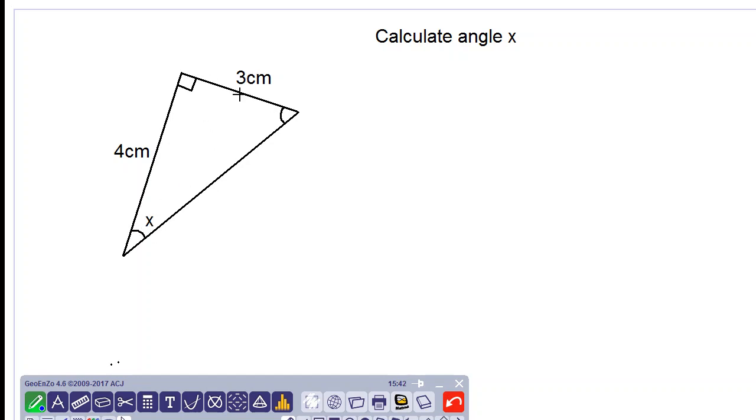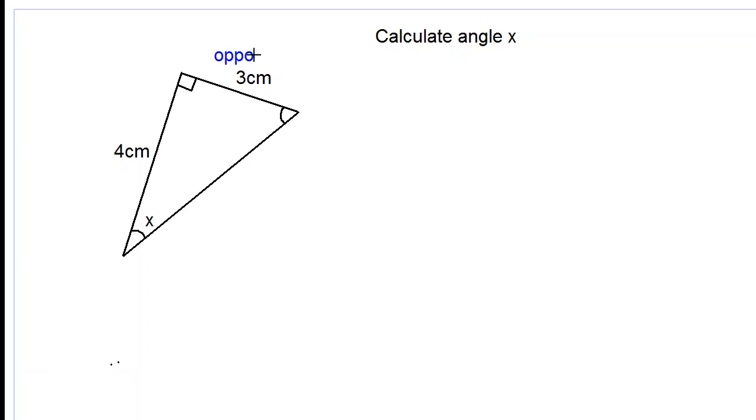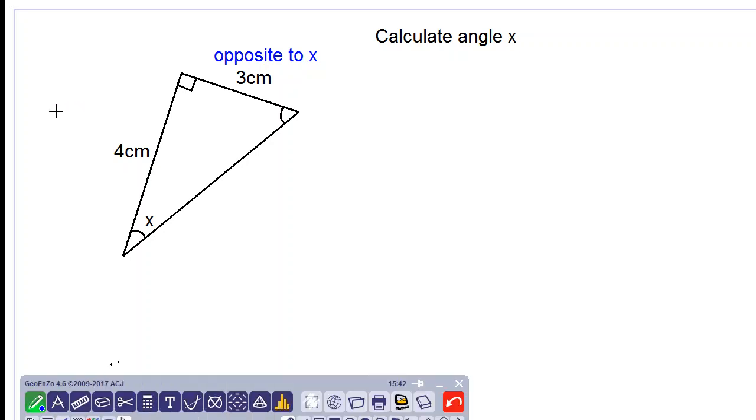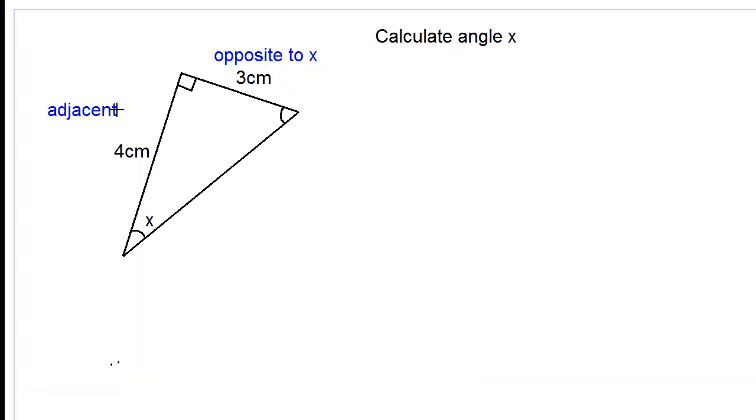So the 3 cm side is the side which is opposite to angle X, of course because it is furthest away from angle X. And the 4 cm side is the one which is adjacent to angle X.